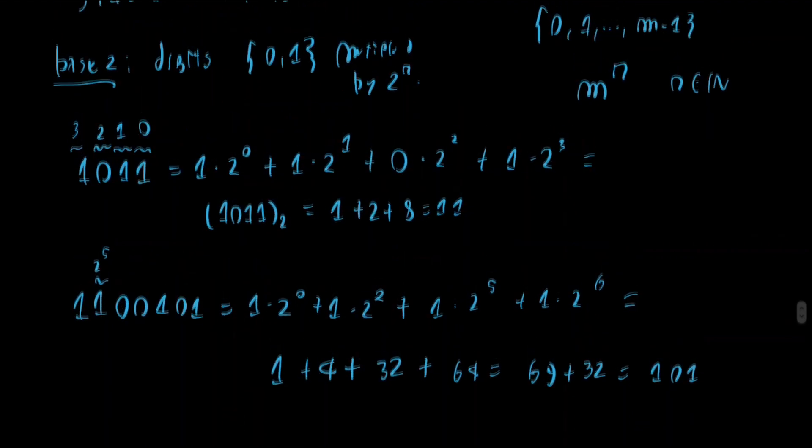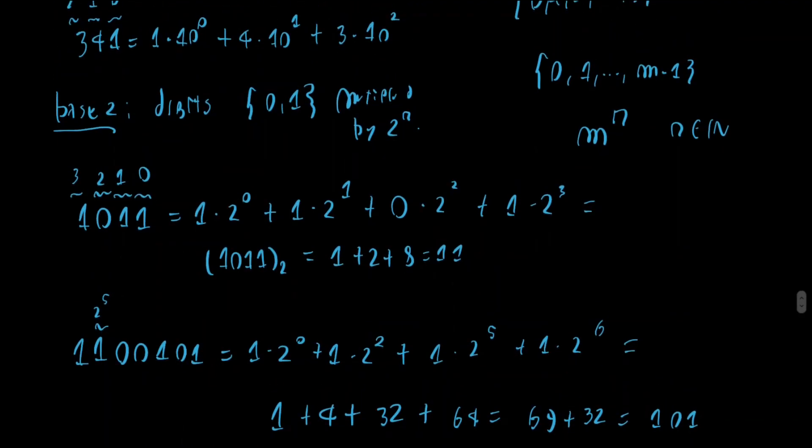So now we have learned how to convert binary numbers from binary to decimal. So let's write here, binary to decimal. So how can we do the other way around? So how can we convert, so now we have a question, from decimal to binary?